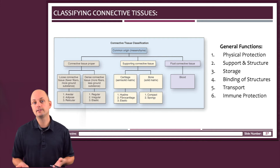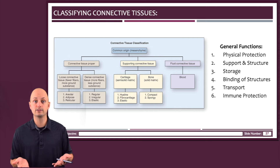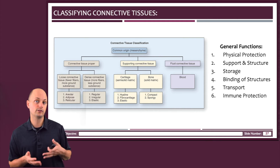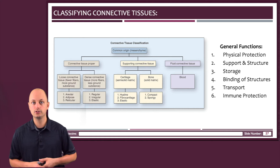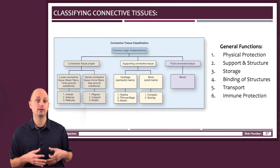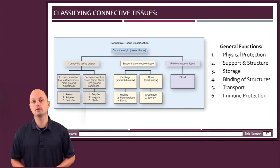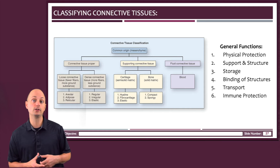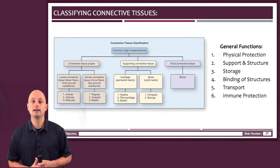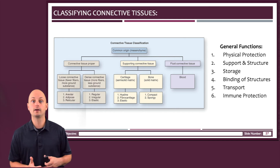The table on the left is a schematic diagram showing how different connective tissues can be classified. You can see that blood is sort of in a category all by itself because it's the only fluid connective tissue. The different types of bone and cartilage make up the supporting connective tissue category, and the areolar, reticular, and adipose tissue make up the loose connective tissues, and the dense regular and irregular connective tissue make up the dense connective tissue category.